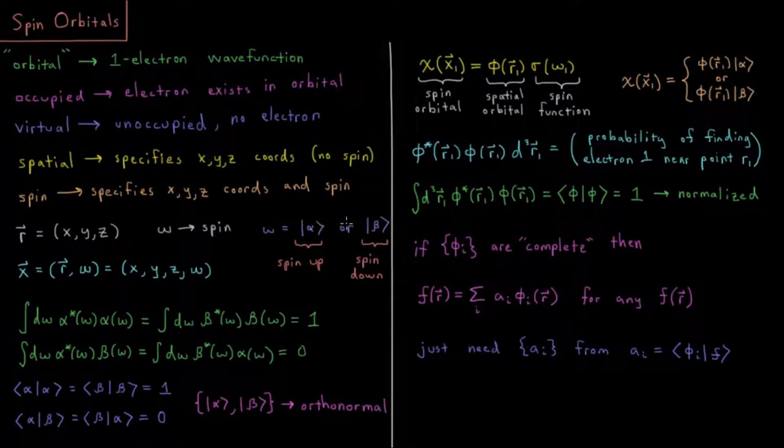spin up, or beta, spin down, where this type of notation here is the Dirac notation for those spin functions. You can review Dirac notation in the quantum chemistry playlist if you are confused about that.